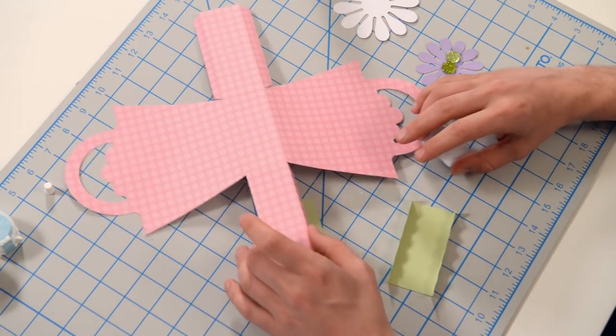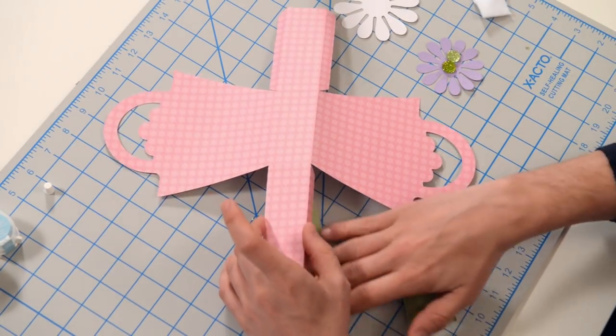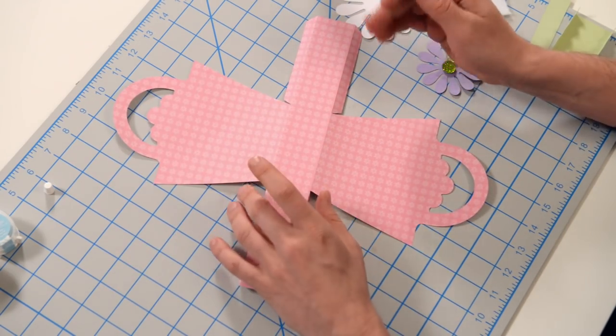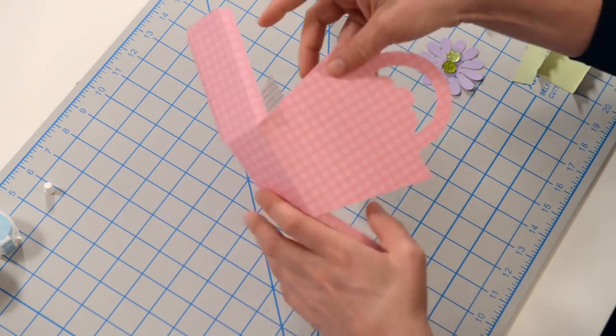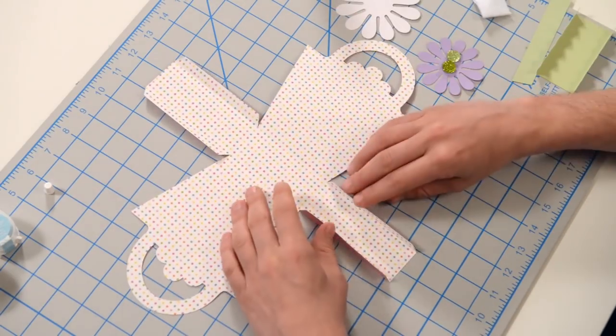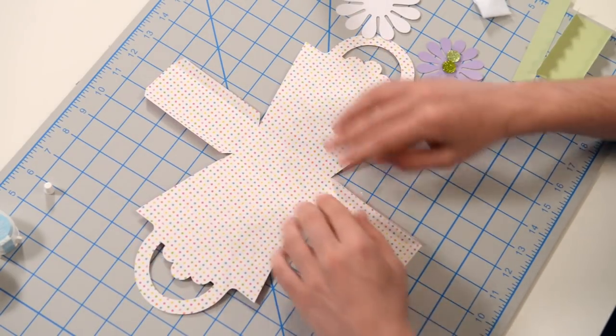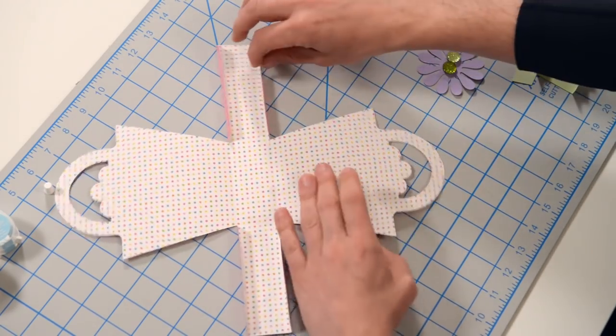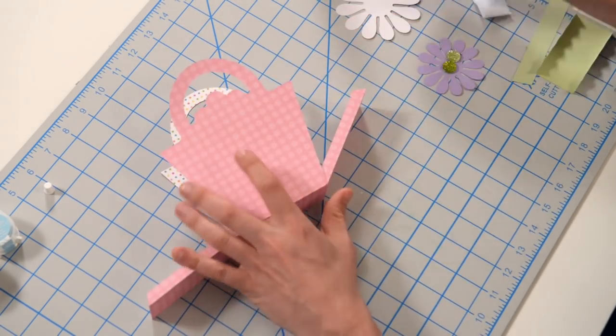So I have all the pieces here in front of me. Let's take a look at this. This is the main piece here. As you can see, it's actually just one piece and it goes together very easily. I've already pre-folded everything at the little score marks.